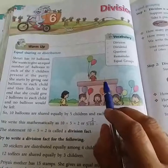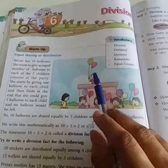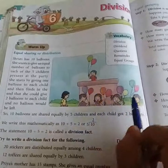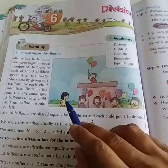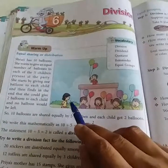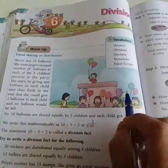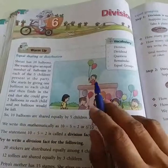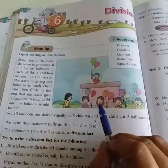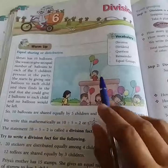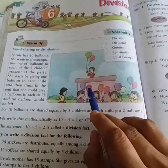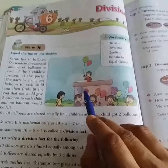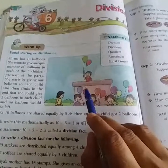Then again you will distribute 1-1 balloon to other students. Now you will not be having any balloon in your hand. That means you have distributed the number of balloons equally among 5 students, and each student is getting 2 balloons in the hand. That means it is equal sharing of the balloons or we can say this is division.